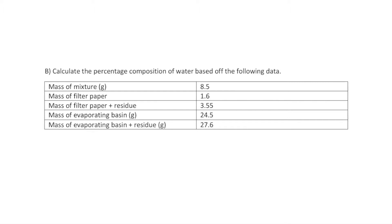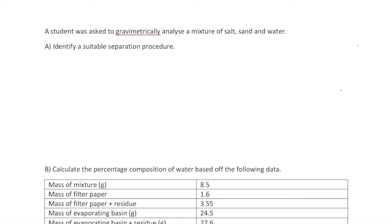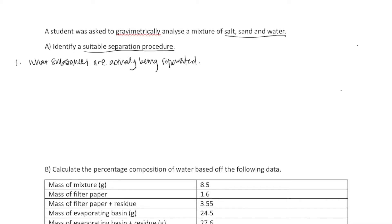The first part asks you to identify a suitable separation procedure for this mixture of salt, sand, and water. Whenever you have a question about what separation procedure to use, there are two main things to consider. The first is: what substances are actually being separated? For example, is it a solid-solid mixture, a solid-liquid mixture, or a liquid-liquid mixture? This will allow you to identify the specific separation technique you should use.